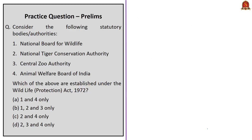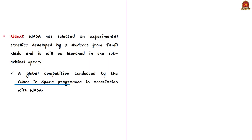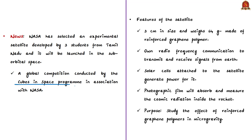The next news article talks about the achievement of three Indian college students whose experimental satellite was selected by NASA to be launched in sub-orbital space for a few minutes prior to landing in the ocean. This global competition is conducted by the Cubes in Space program in association with the United States Space Agency. The students were guided by Space Kids India. Their satellite, three centimeters in size and weighing 64 grams, was made of reinforced graphene polymer.